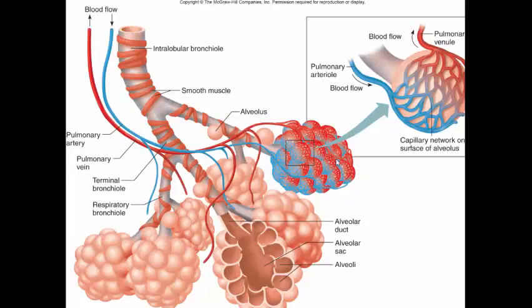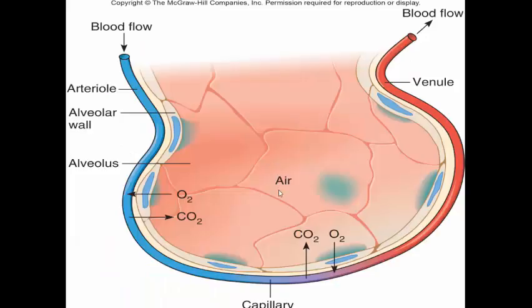Alveoli literally look like clusters of grapes on a vine — individual air sacs. Inside the air sac, blood comes from the heart with less oxygen than in the lungs, so oxygen diffuses from the lungs into the blood. Conversely, there is more carbon dioxide in the blood than in the lungs, so it diffuses from the blood into the lungs to be breathed out. There are literally millions of these in each lung.